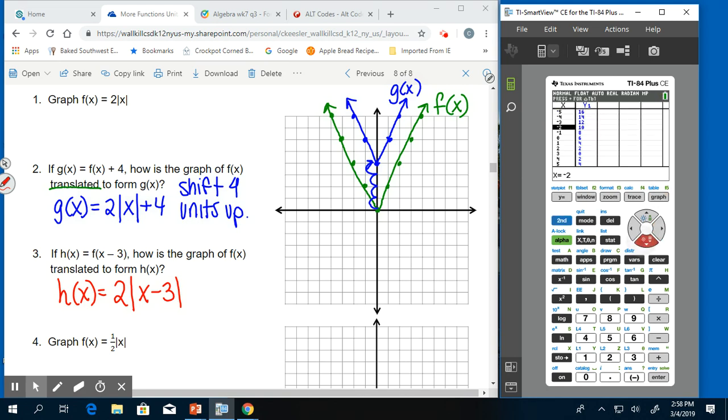And this time we see our vertex is at 3, 0. So we can graph negative 1, 8, or 0, 6, 1, 4, 2, 2, 3, 0 is our vertex. And then it goes up the opposite way, being symmetric to the other half of the absolute value equation. And we get h of x is this graph here.